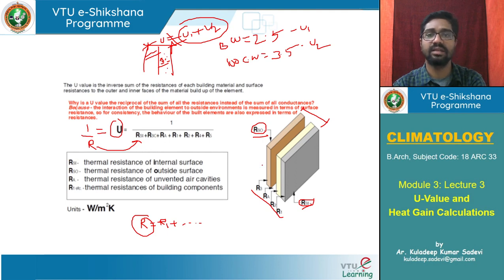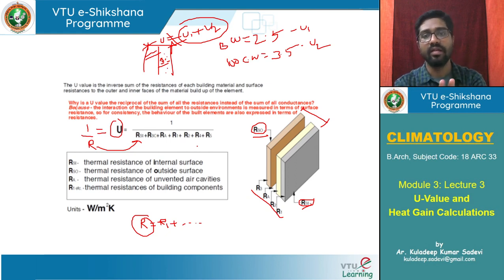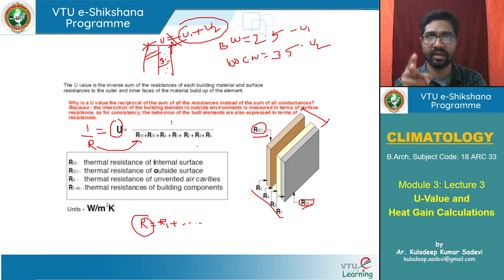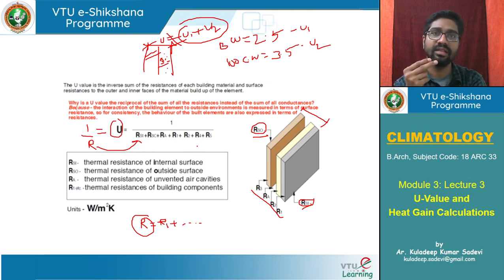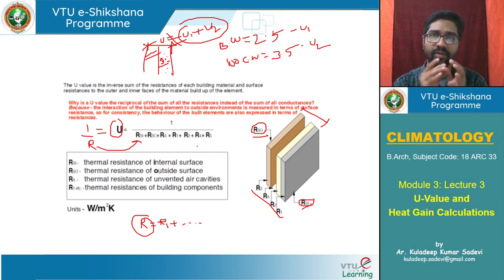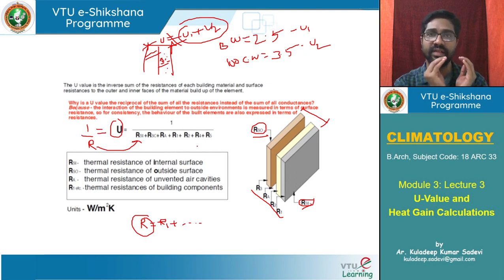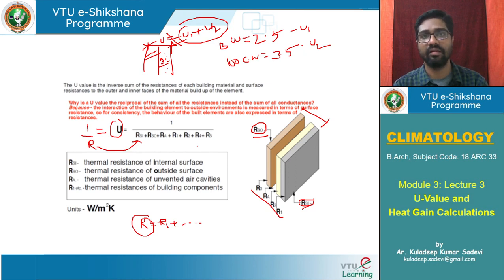This is the calculation procedure. If we know R directly, we add them and calculate U. If we don't know R, we need thermal conductivity K and thickness T — then R = T/K. Once we know R for all components, we add them: R1 + R2 + R3 + internal and external surface resistance. We get total R, and 1/R gives us U-value.